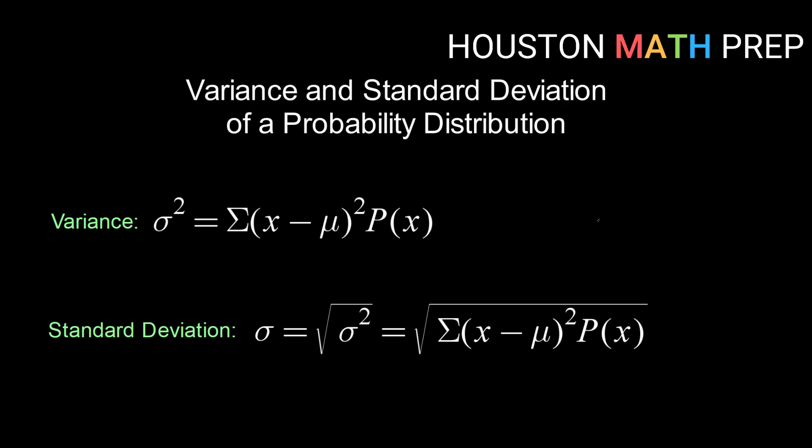So the formulas are here on your main screen for you. We have our variance, which we use sigma squared. The way that we would calculate that is we would sum up the squared difference between each random variable and the mean, also known as the expected value. So you might see E there. And we would multiply each of those by the associated probability. So that would get us our variance.